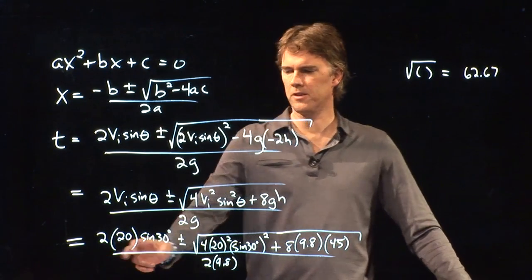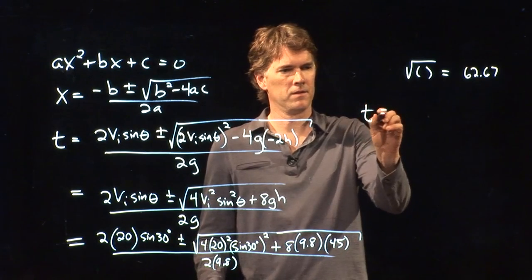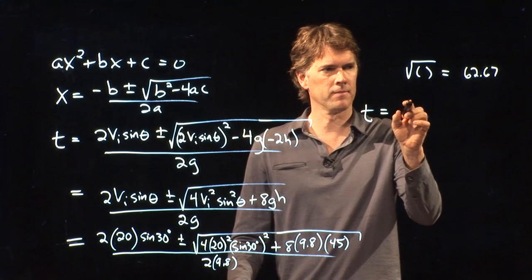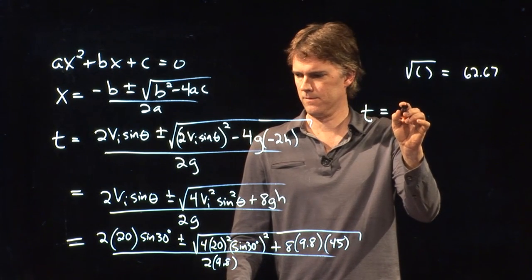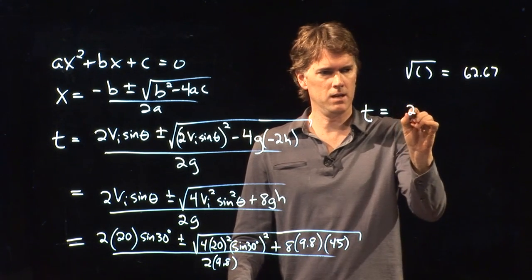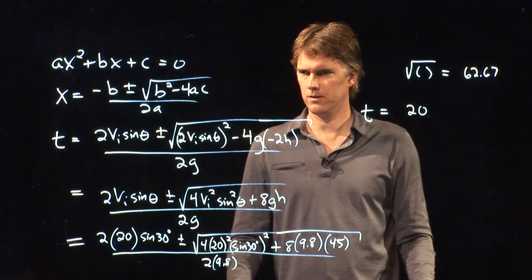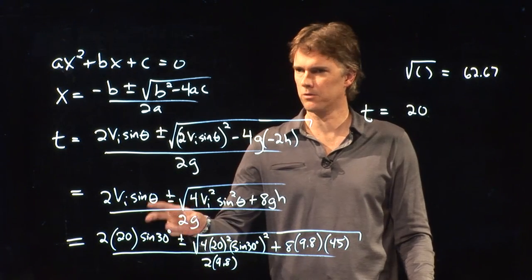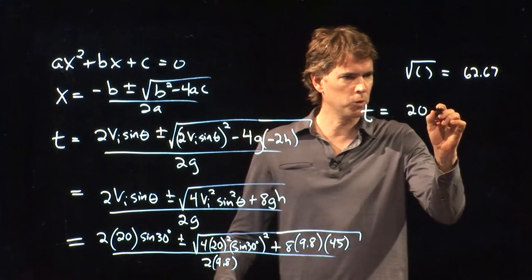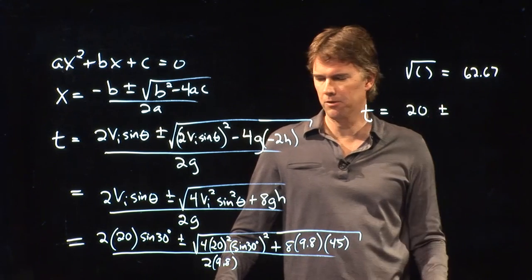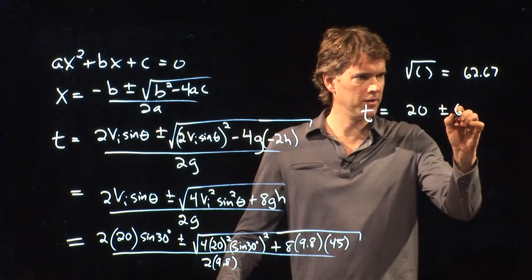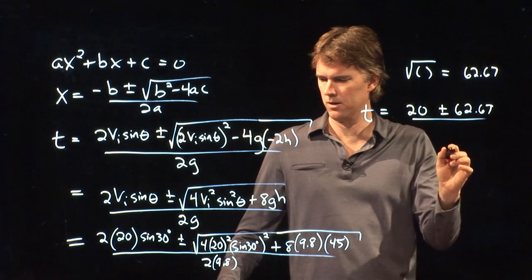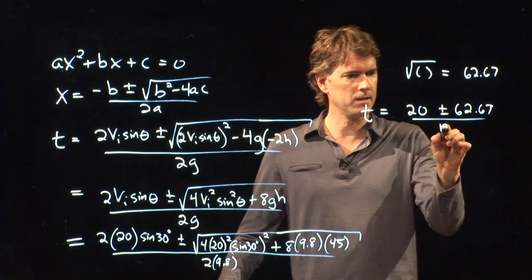So let's do the other stuff. What is this first part? 40 times sine of 30. What do you guys get for that? 20? That makes sense, right? 30, 60, 90. 1 square root of 3, 2. So sine of 30 is a half.